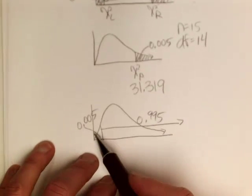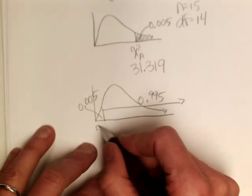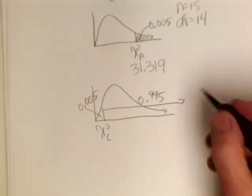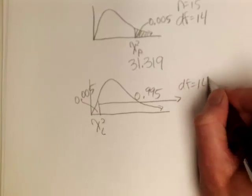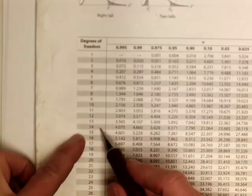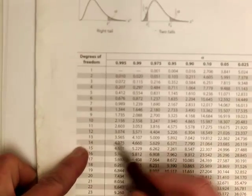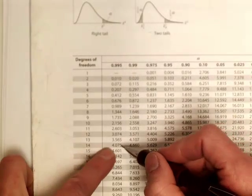That should make sense — these are complementary areas. For the lower critical value, I go to the row corresponding to 14 degrees of freedom, but now I read across for an area to the right of .995. So I get 4.075.